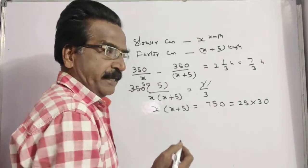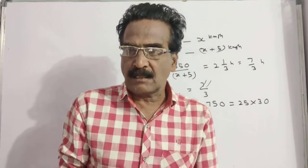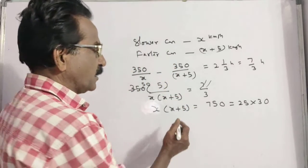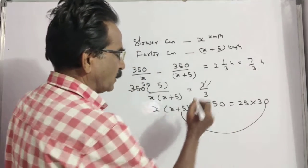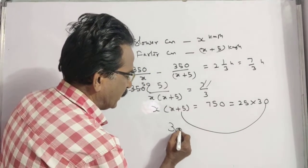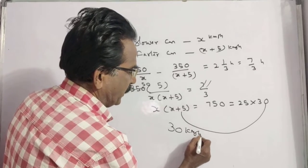So we want the speed of the faster car. This is the slower car, this is the faster car. So the speed of the faster car is 30 kmh.